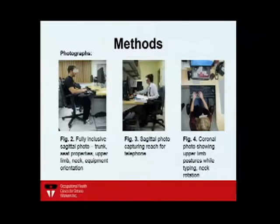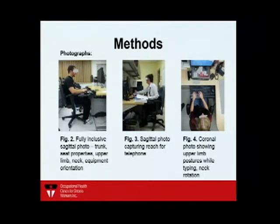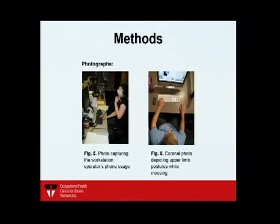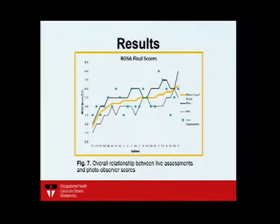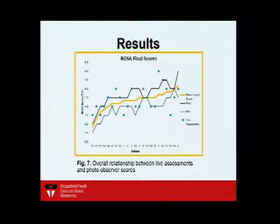We used five standardized photos: a sagittal view of the person sitting, one of them reaching for the telephone, a photo from above showing upper limb postures while typing and neck rotation, a photo of phone interaction checking for the neck-and-shoulder hold, and a picture of their mousing posture. We found very reasonable agreement between photo-based assessment and in-person assessment — no significant difference between those.